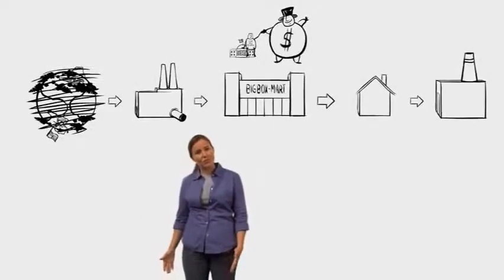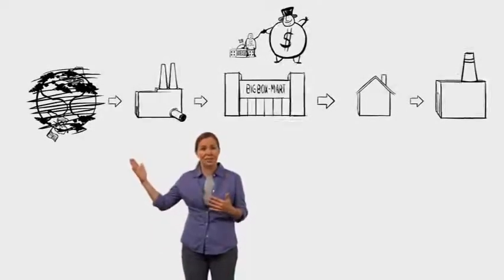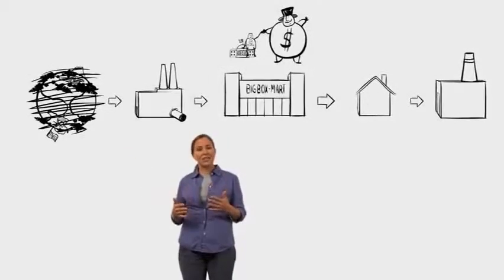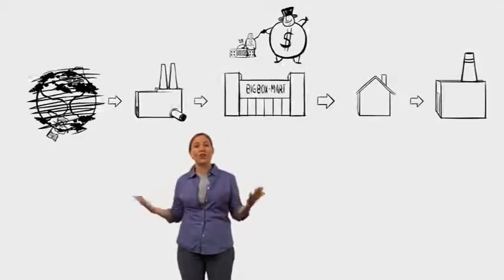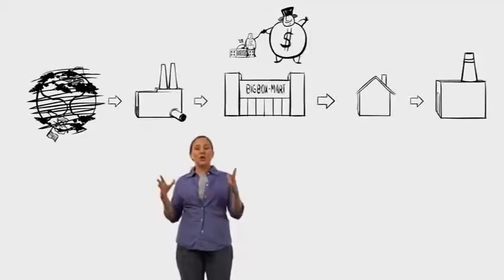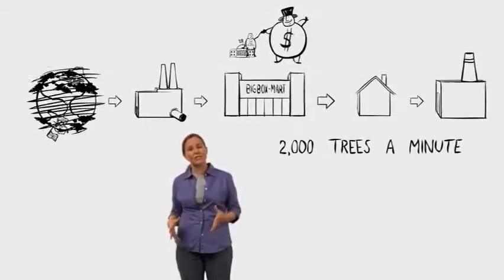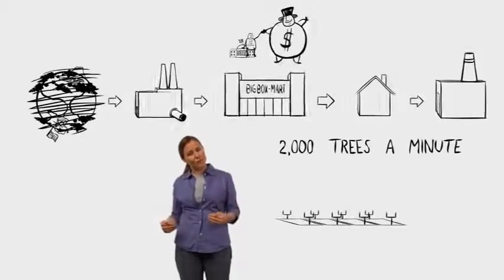75% of global fisheries now are fished at or beyond capacity. 80% of the planet's original forests are gone. In the Amazon alone, we're losing 2,000 trees a minute. That is 7 football fields a minute.